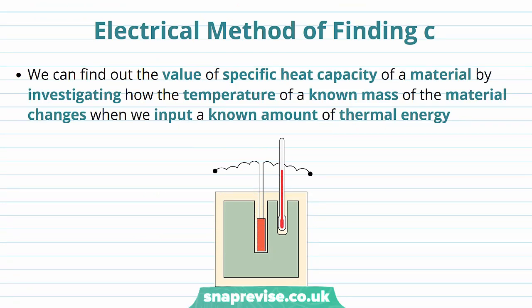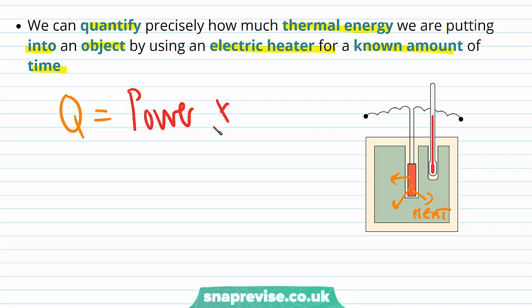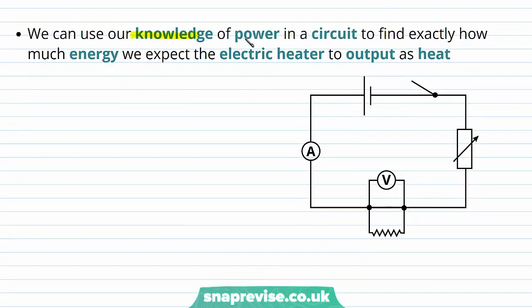We're now going to show how we can experimentally determine the specific heat capacity of a material by investigating how the temperature of a known mass changes when we input a known amount of thermal energy. We can quantify precisely how much thermal energy we're putting into an object by using an electric heater for a known amount of time, calculating it with the equation: thermal energy Q equals power P times time t. We can find power using P equals current I times voltage V.